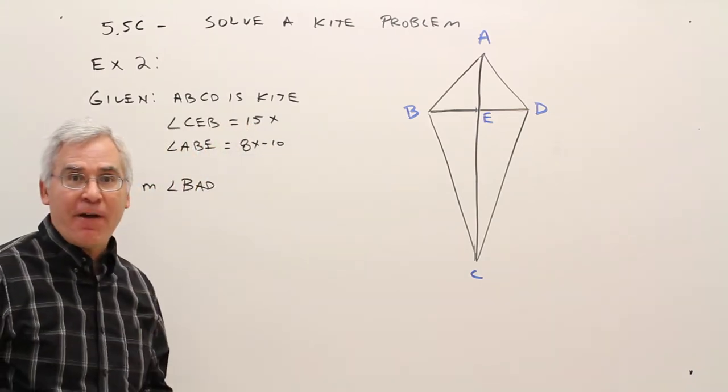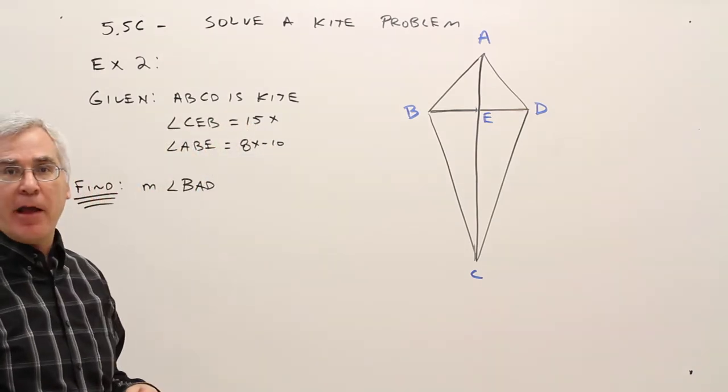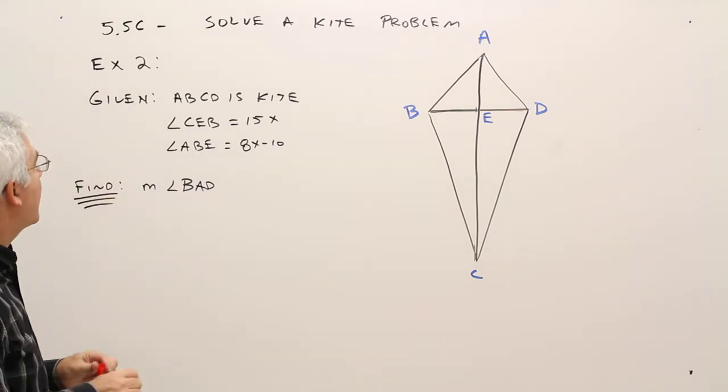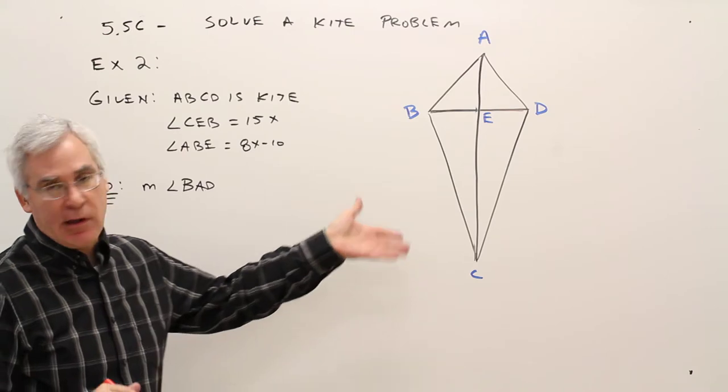Welcome to video 5.5C, Solve a Kite Problem. So this is example two. I'll mark up the given as we go along. ABCD is a kite.